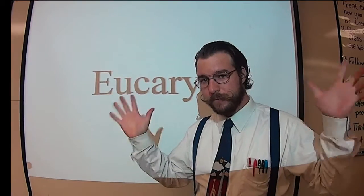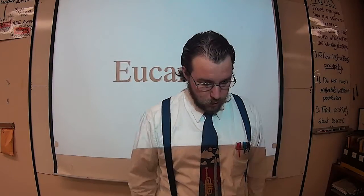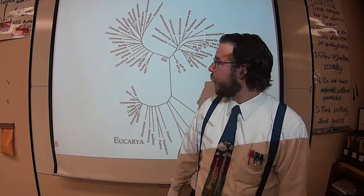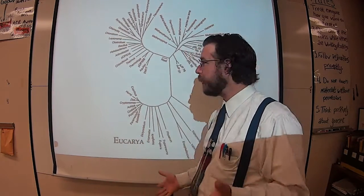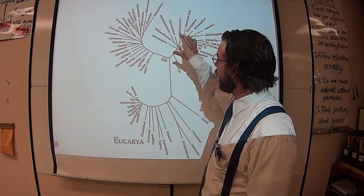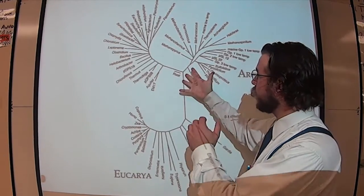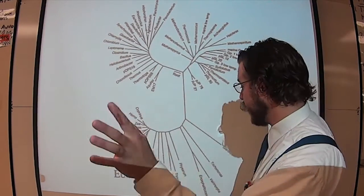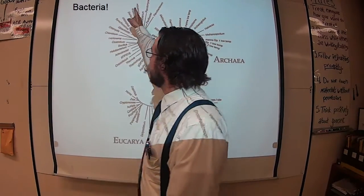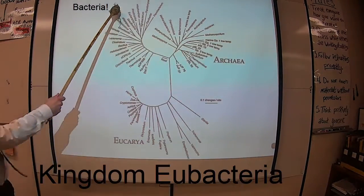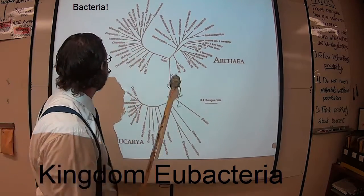Eukarya — these are things with a nucleus. Here are some pictures of how that whole three-domain system works. Sometimes we refer to it as the tree of life. In the middle there's the root — that's like the origin of life — and then the three different branches. Here's the branch for bacteria, which has Eubacteria in it — all the true bacteria, the stuff that can make you sick.